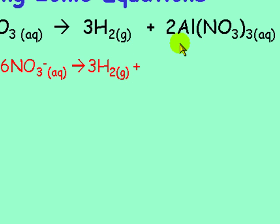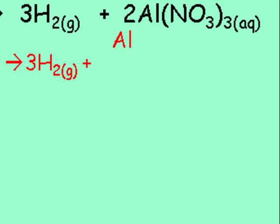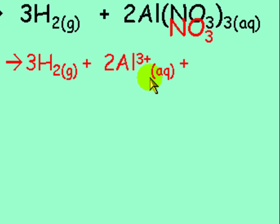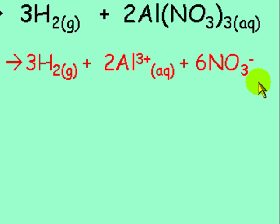Then we put a plus sign. Aluminum nitrate is aqueous, so we must dissociate it into ions. We go to the ion table and find the aluminum ion Al³⁺ and the nitrate ion NO₃⁻. We bring down the aluminum with a plus 3 sign. Notice there is a big 2 in front, so we have 2 aluminums, and since this salt is aqueous, we put aqueous by it. We bring down the NO₃⁻ with a minus charge — there are 3 times 2, which are 6 NO₃⁻'s, so we put a 6, and don't forget the aqueous.